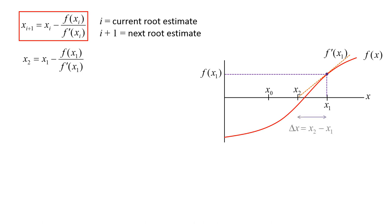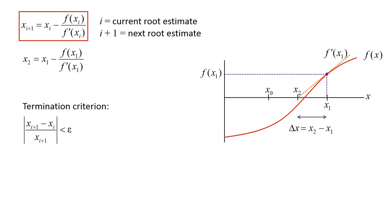Delta x is the difference between the next root estimate x2 and the current root estimate x1. We iterate on this equation until the percent difference between the next root estimate and the current root estimate is less than some small value epsilon, which is set by the user.